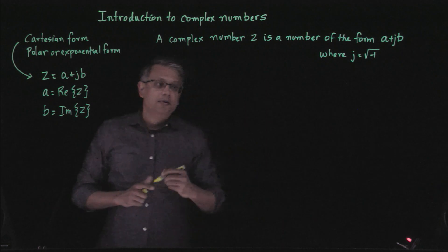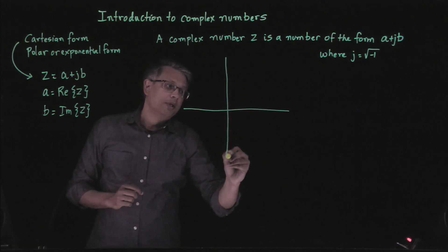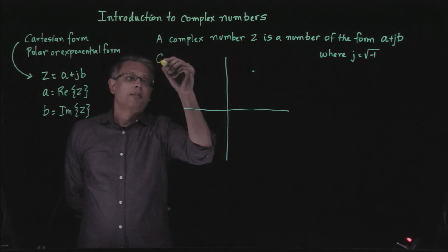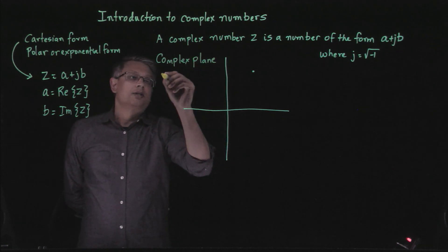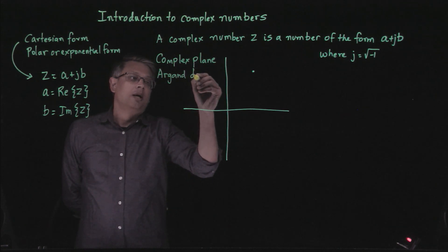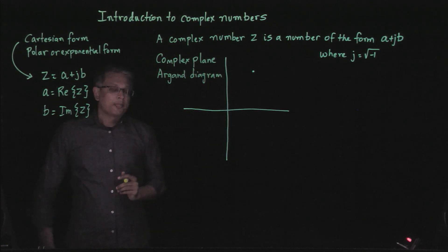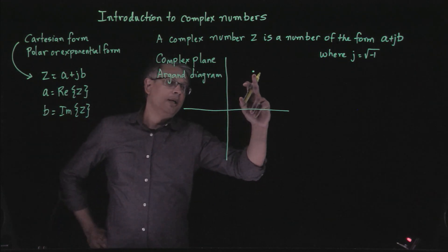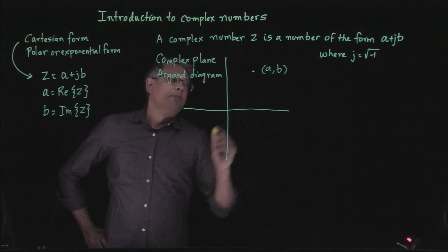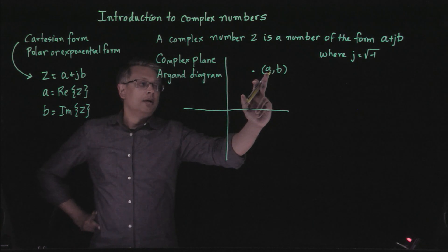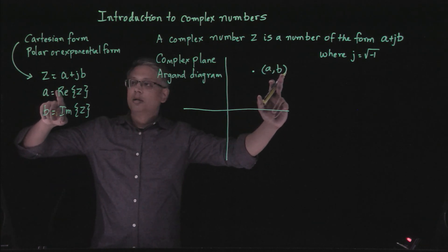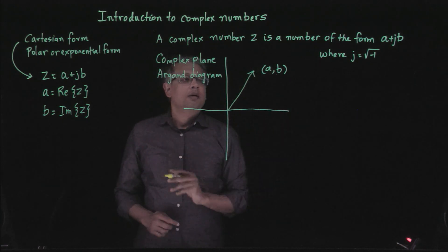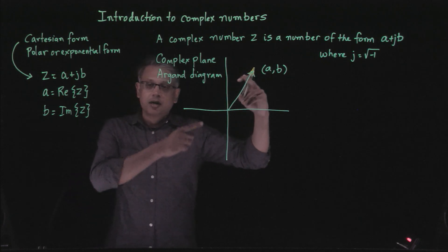It turns out that it's very useful to think of a complex number as a point in a two-dimensional plane called the complex plane, sometimes also called an Argand diagram. In this diagram, the complex number z is represented by a point with coordinates (a, b), where the x-coordinate represents the real part and the y-coordinate represents the imaginary part. We can also think of the vector connecting the origin to this point as representing the complex number.